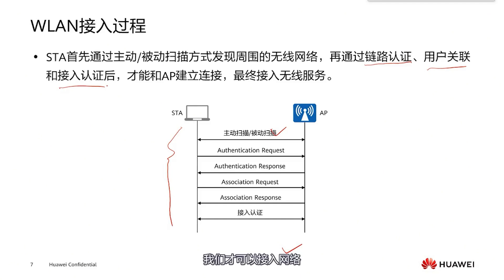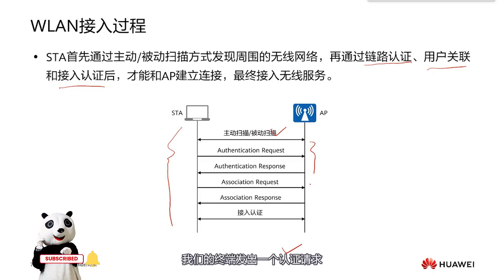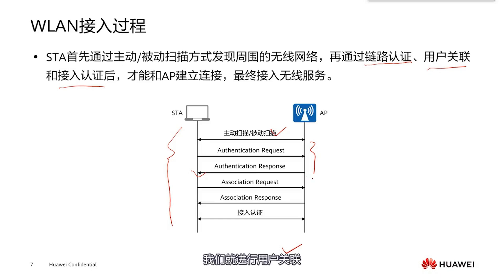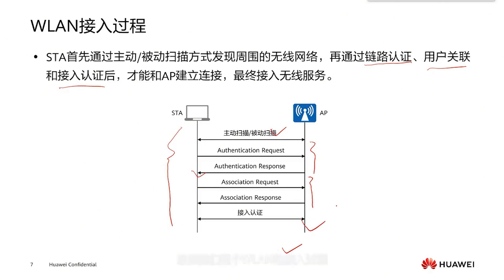After these three steps, we can finally access the network. For link authentication, our terminal sends an authentication request, and then the AP replies with an authentication response. Once the authentication request is approved, we proceed to user association. After successful user association, we begin access authentication. This is the entire WLAN access process.